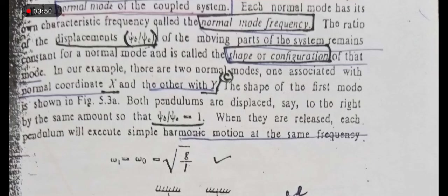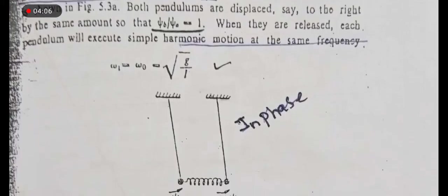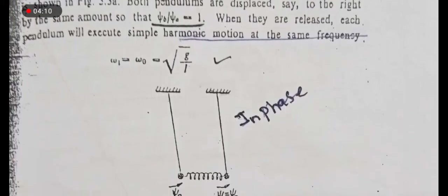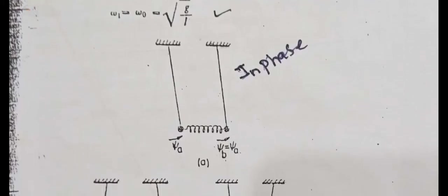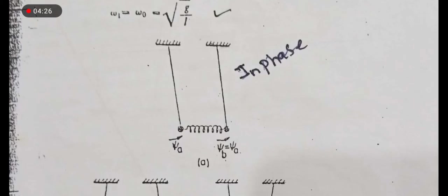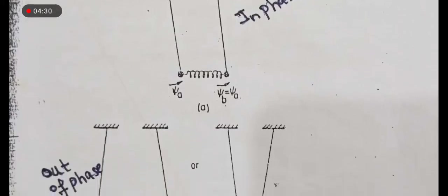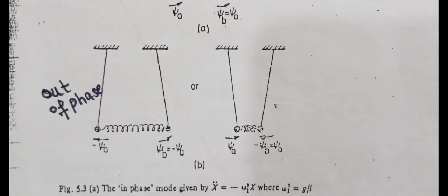اب c سے start کرتے ہیں — shape of the first mode۔ اگر ہم first mode کی shape بتانا چاہیں تو وہ in-phase ہوگی، جب ratio psi_b over psi_a is equal to 1 ہو۔ جب انہیں release کیا جائے تو each pendulum simple harmonic motion execute کرے گا at the same frequency omega_1 is equal to omega_0 is equal to under root g over l۔ دونوں pendulums same direction میں ہیں، same motion کر رہے ہیں، تو psi_b is equal to psi_a ہے اور دونوں کی displacement equal ہوگی — یعنی دونوں in-phase ہیں۔